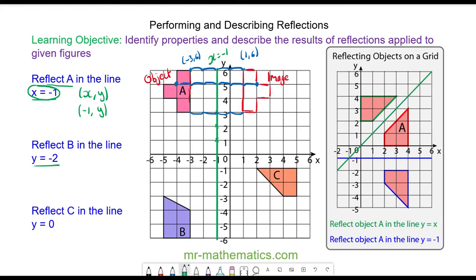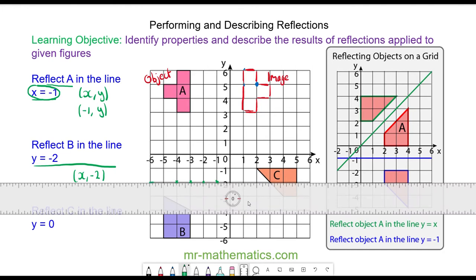Now I'm going to reflect B in the line y is equal to negative 2. The y value will always be negative 2. So y is negative 2 here, anywhere along this horizontal line. The mirror line will pass through these coordinate pairs. Here is the mirror line y is equal to negative 2.